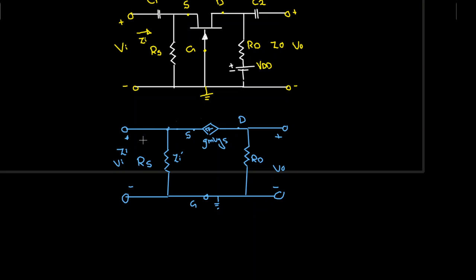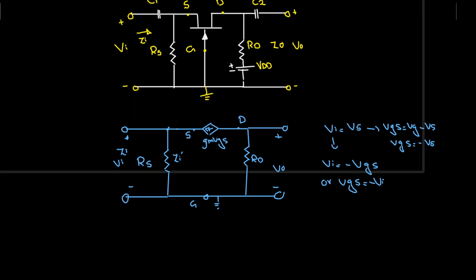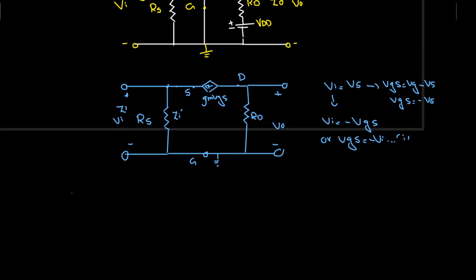We have vi, and vi is equal to vs. We also have vgs equal to vg minus vs. Because vg is grounded, this becomes vgs equals minus vs, which means that vi is equal to minus vgs. This is our first equation.